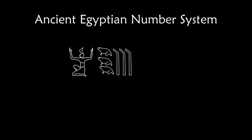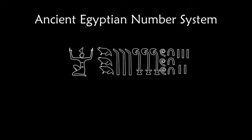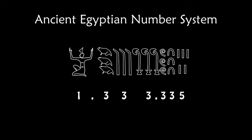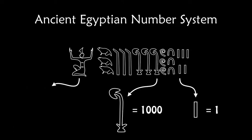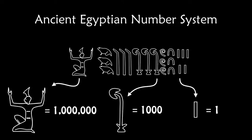We're going to start by looking at the ancient Egyptian number system using hieroglyphs. If you recorded numbers in ancient Egypt, you would be familiar with a set of symbols. This number is 1,333,335. Here it is engraved. This symbol means 1, the lotus means 1,000, and the god with raised hands means 1,000,000.